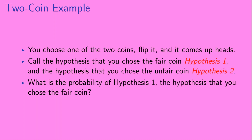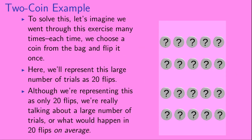You choose one of the two coins, flip it, and it comes up heads. Let's call the hypothesis that you chose the fair coin hypothesis 1, and let's call the hypothesis that you chose the unfair coin hypothesis 2. So here's our question: what is the probability of hypothesis 1, the hypothesis that you chose the fair coin?